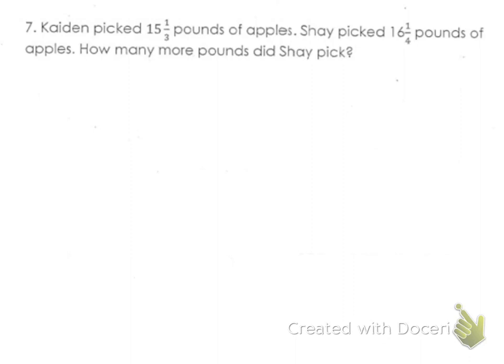So how much do we need to add to Caden's to get how many pounds Shea picked? Well, to find that out we're going to subtract. We're going to take the amount that Shea picked and subtract Caden's amount off, and that's going to show you how much more Shea picked. So we're doing 16 and a quarter minus 15 and a third.